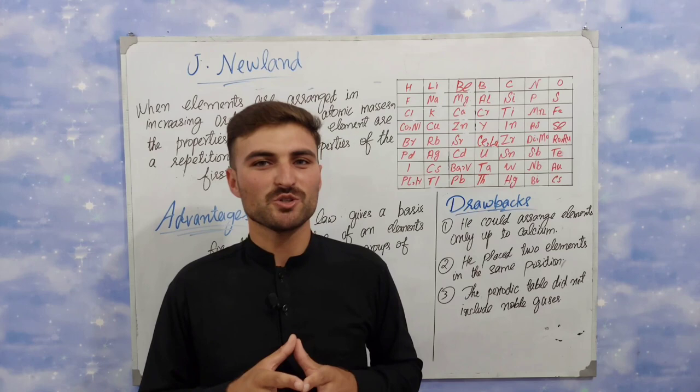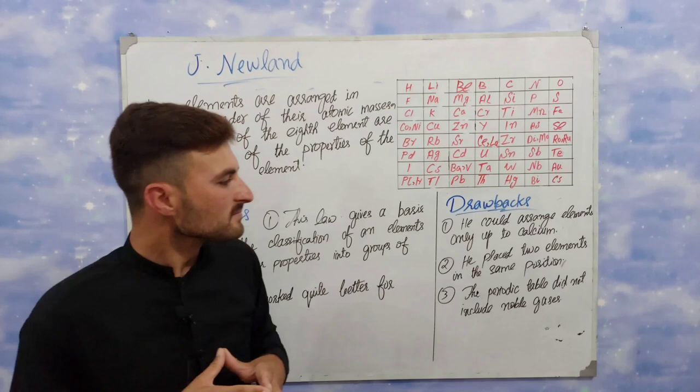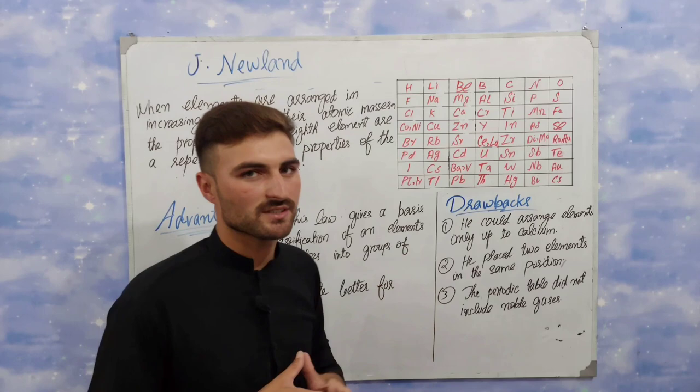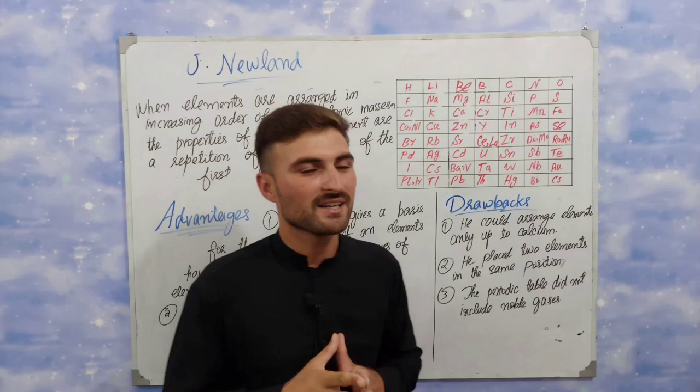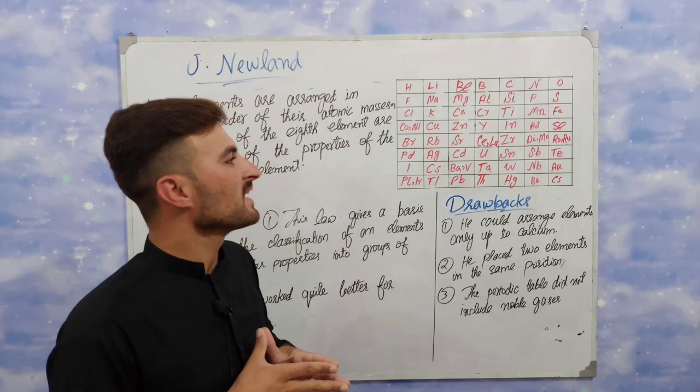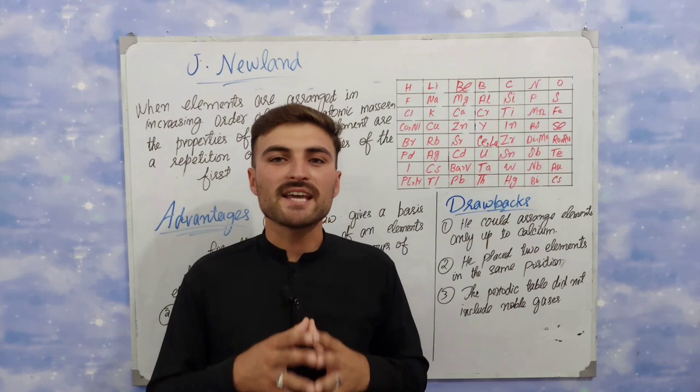The second drawback was that he placed two elements in the same position. We know that every element needs a separate place, but he placed two elements in the same position. For example, he placed Cobalt and Nickel in the same position, and he placed Cerium and Lanthanum in the same position. So that was the second drawback.